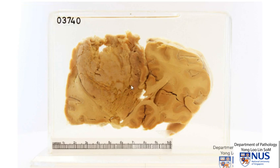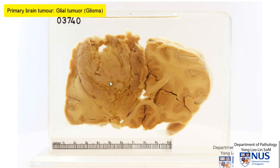Because of the location of this tumour right within the brain parenchyma and also the gross appearance where it's quite smooth in terms of the texture and the cut surface, this is likely to represent a glial tumour. This is in contrast to a meningioma, which is another primary intracranial tumour, which usually shows a much sharper demarcation between the tumour and the brain parenchyma.